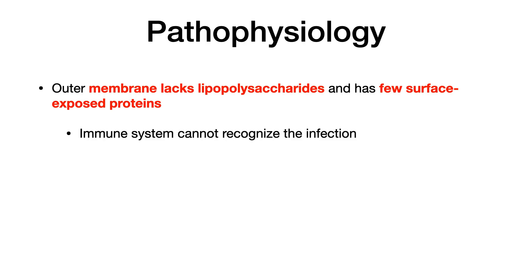Regarding pathophysiology, the outer membrane of the spirochete lacks lipopolysaccharides and does not have many surface-exposed proteins. Our immune system relies on the recognition of proteins and lipopolysaccharides on the outer membrane to trigger an immune response, but it can't do that here. It's as if Treponema pallidum puts on a disguise — the lack of proteins and lipopolysaccharides acts like an invisibility cloak — and therefore the immune system cannot mount an adequate response.